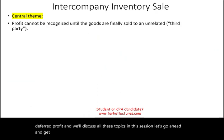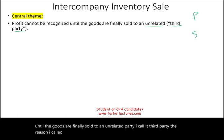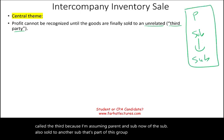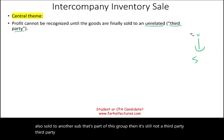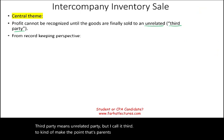The central theme is the profit cannot be recognized until the goods are finally sold to an unrelated party — I call it a third party. The reason I call it third is because I'm assuming parent and sub. If the sub also sold to another sub that's part of this group, then it's still not a third party. Third party means unrelated party.